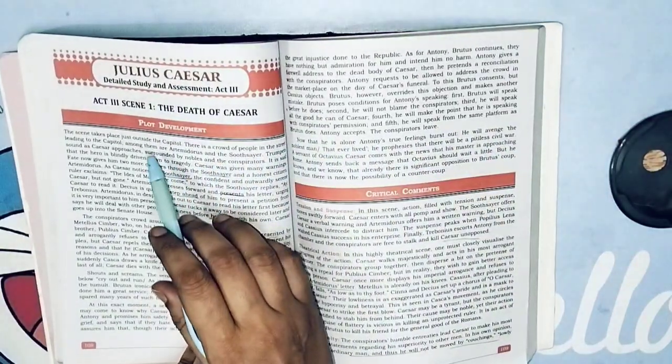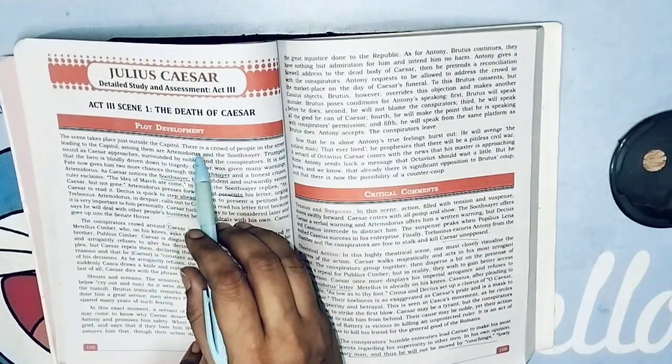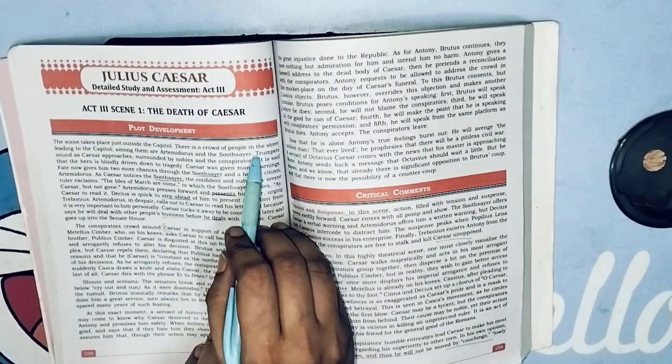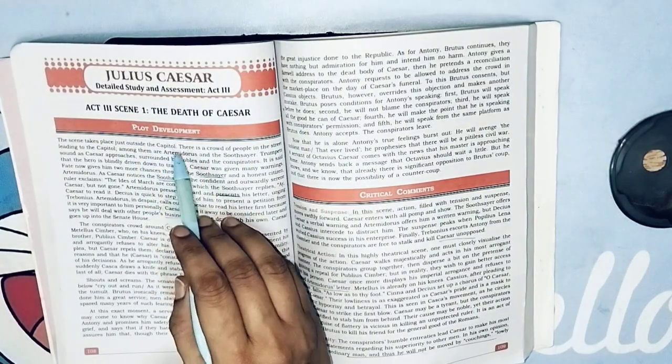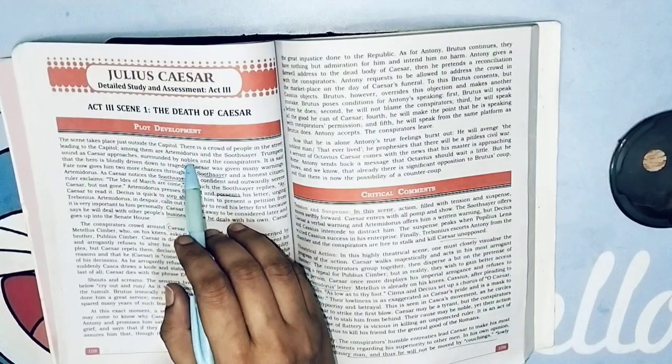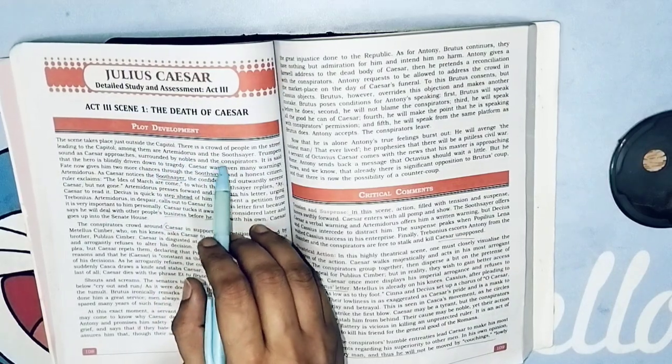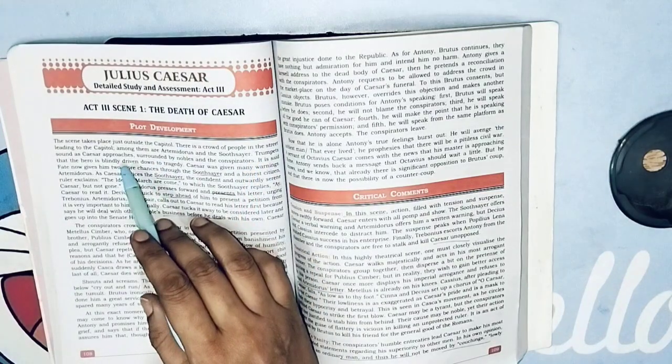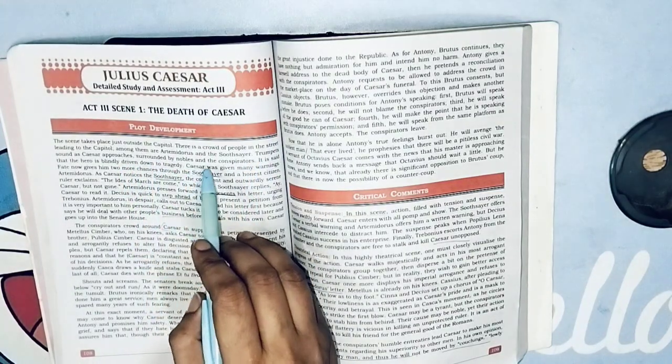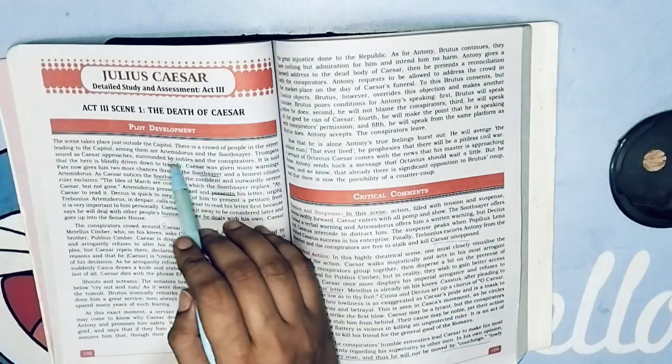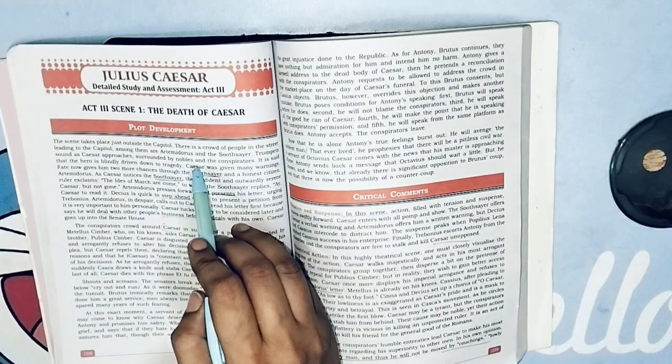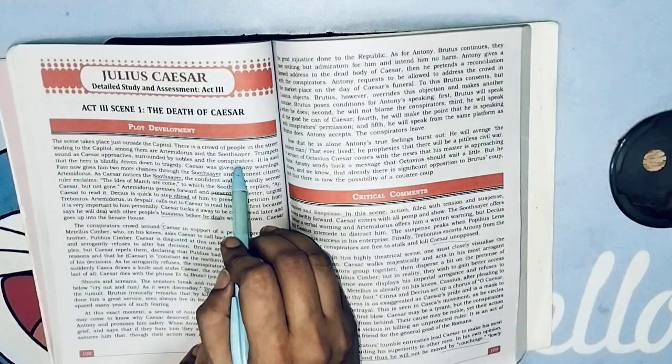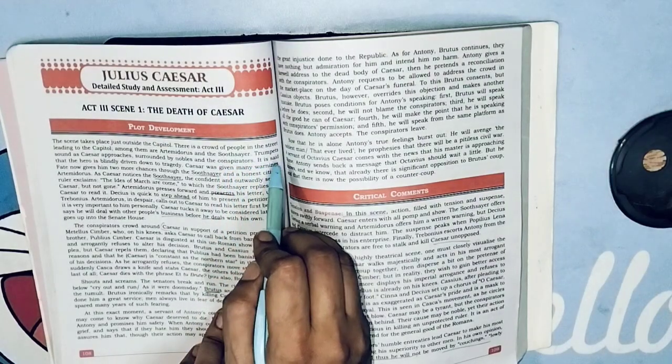The scene takes place just outside the Capitol. There is a crowd of people in the street leading to the Capitol. Trumpets sound as Caesar approaches surrounded by nobles and the conspirators.